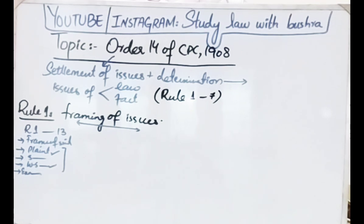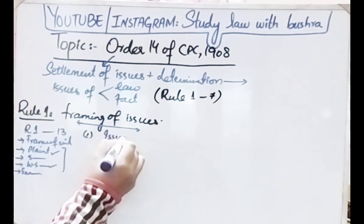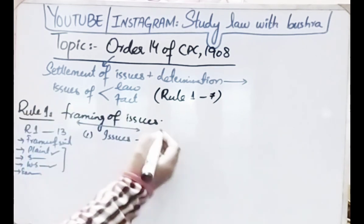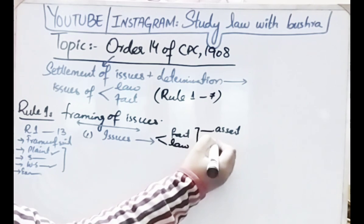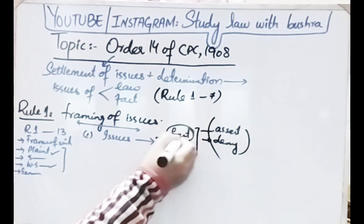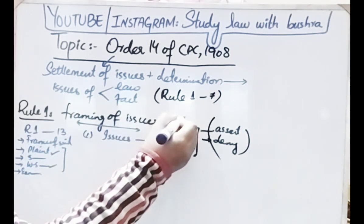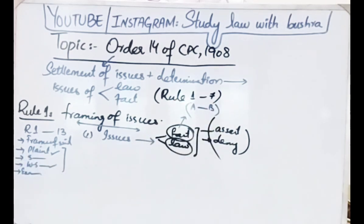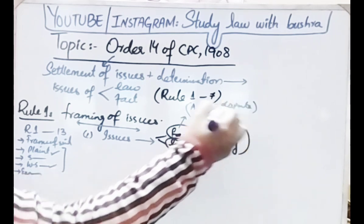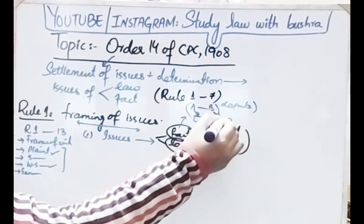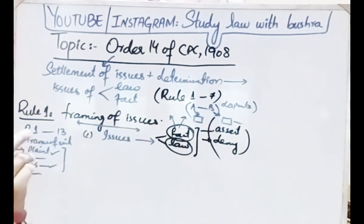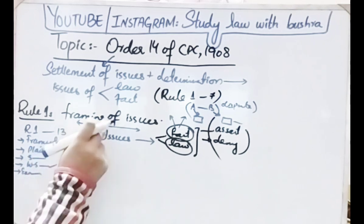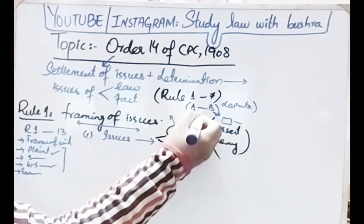Issues arise when a material proposition of fact or law is affirmed by one party and denied by the other. For example, if A says a house belongs to him and B denies it, that is an issue of fact. The court then frames issues on that dispute. Issues can arise both on facts and on law.